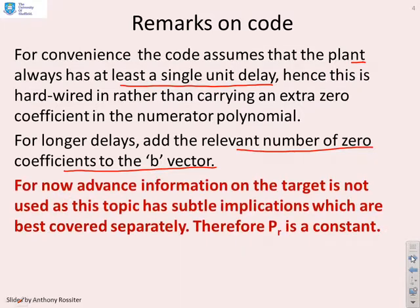For now, we're excluding advanced information on the target because there's lots of subtle implications with this, so it's best covered in later videos. So for now, the feedforward parameter PR will be treated as a constant, which is the same as assuming all the future targets are the same.